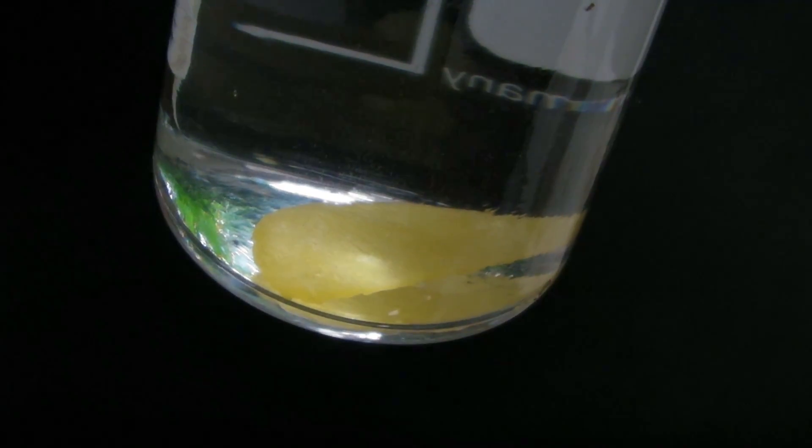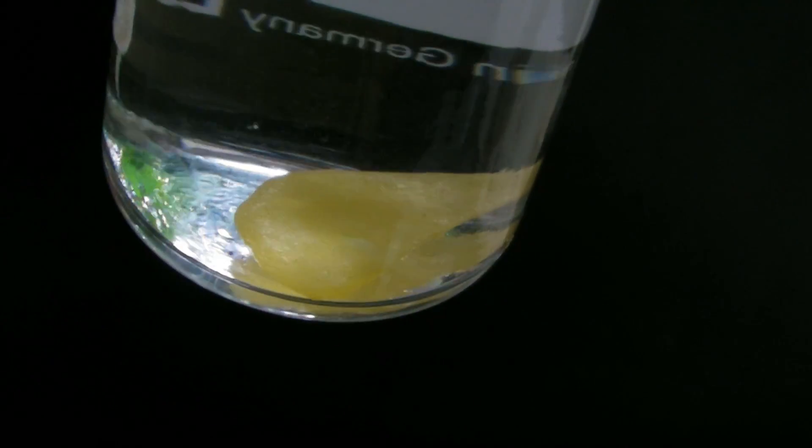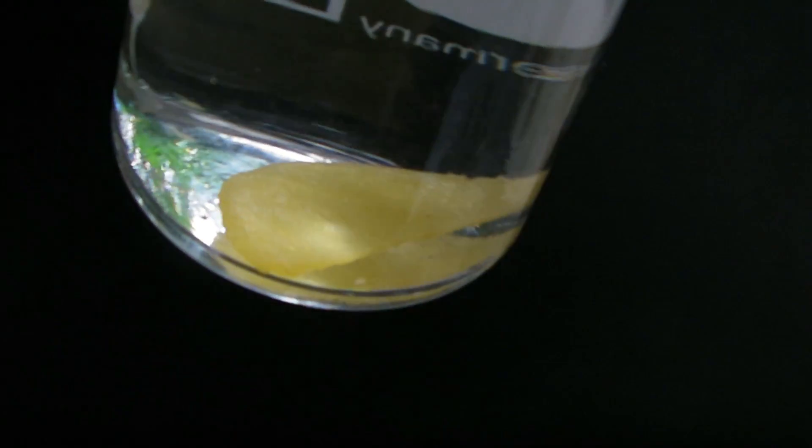The white phosphorus is the most reactive modification of all and has to be stored under water. It is often yellow due to small impurities so it's sometimes called yellow phosphorus.